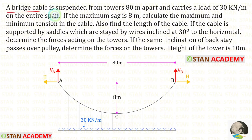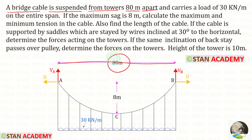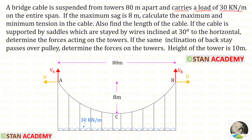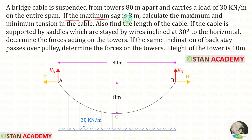A bridge cable is suspended from towers 80 meters apart. So the span is 80 meters and it carries a load of 30 kilonewtons per meter on the entire span. Since the unit is kilonewtons per meter, it is a uniformly distributed load acting on the entire span. If the maximum sag is 8 meters, calculate the maximum and minimum tension in the cable.